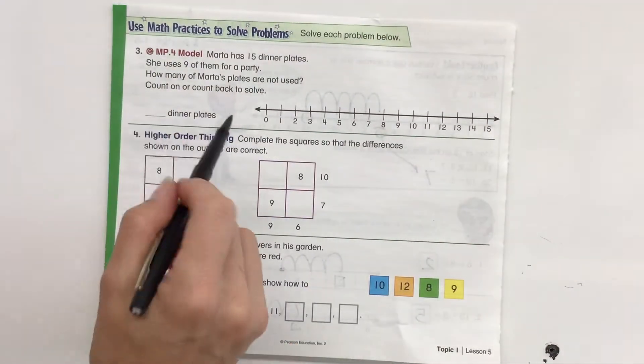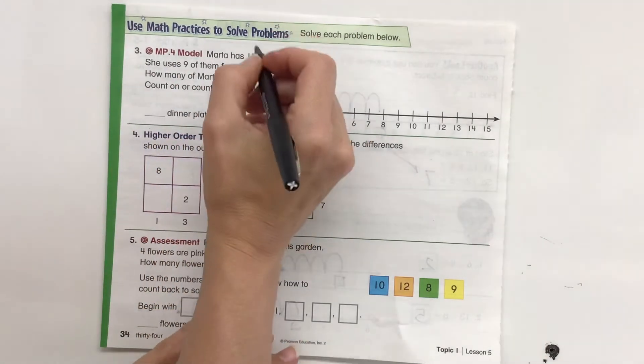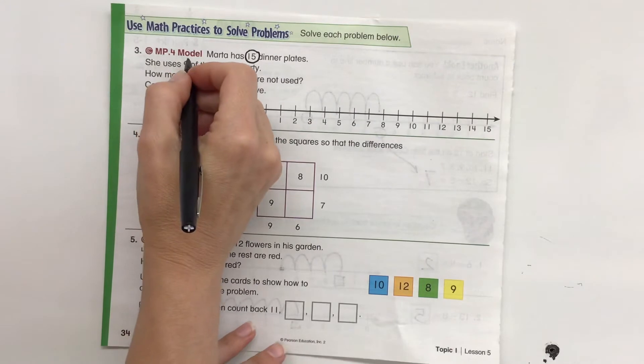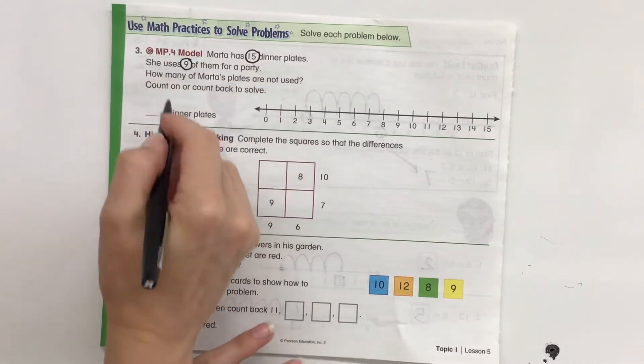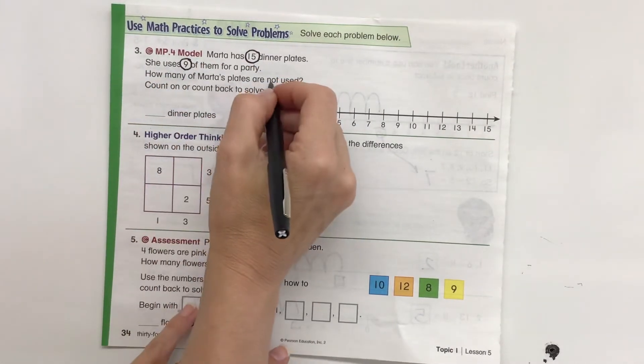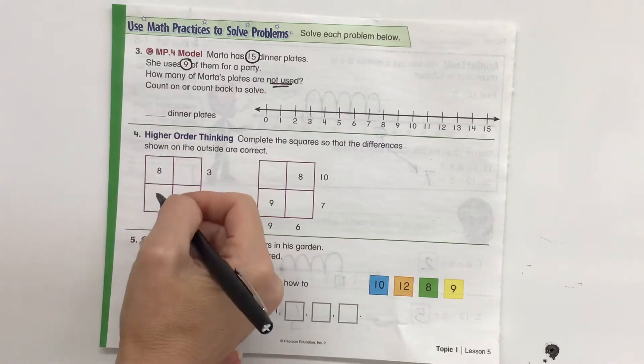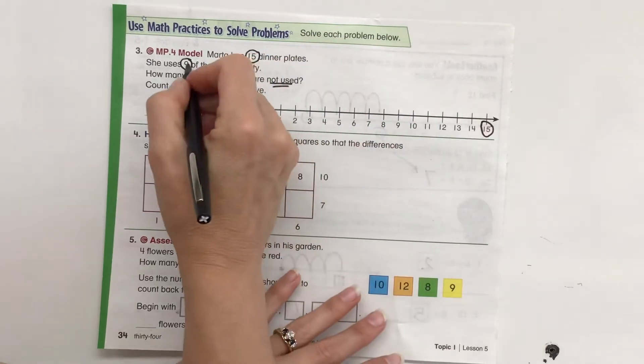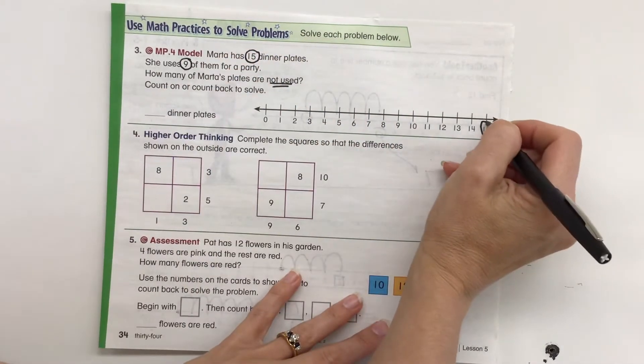Let's take a look at number 3 here. Marta has 15 dinner plates. I'm going to circle 15. She uses 9 of them for a party. How many of Marta's plates are not used? Count on or back to solve. So she has 15 dinner plates. So I'm going to start here at 15. She uses 9 of them. So I'm going to do 9 hops.